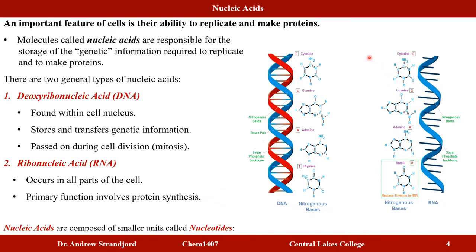A DNA molecule is wound into a double helix — two strands held together by nitrogenous bases. The RNA molecule is a single-stranded alpha helix that also has nitrogenous bases, but it contains uracil where DNA has thymine. All other nitrogenous bases — adenine, guanine, and cytosine — are the same in both DNA and RNA.